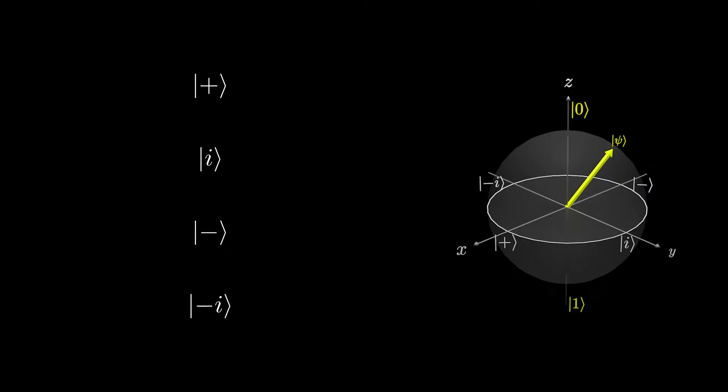The plus state is the state 1/√2|0⟩ + 1/√2|1⟩. The next state is the minus state. This is the same as the plus state, but with a relative phase of negative one.